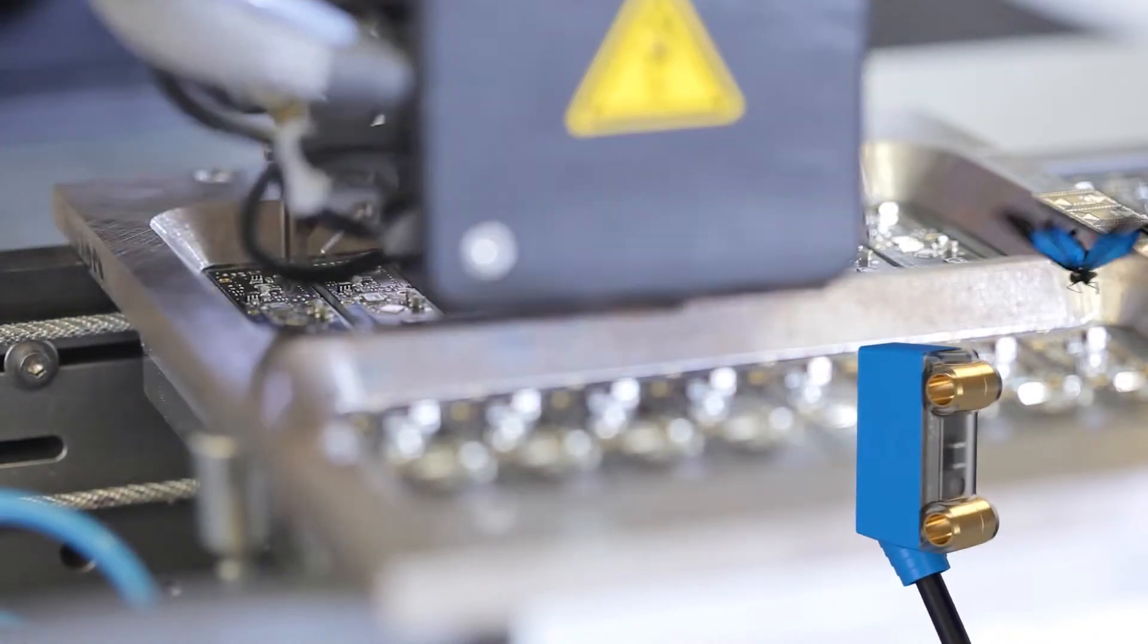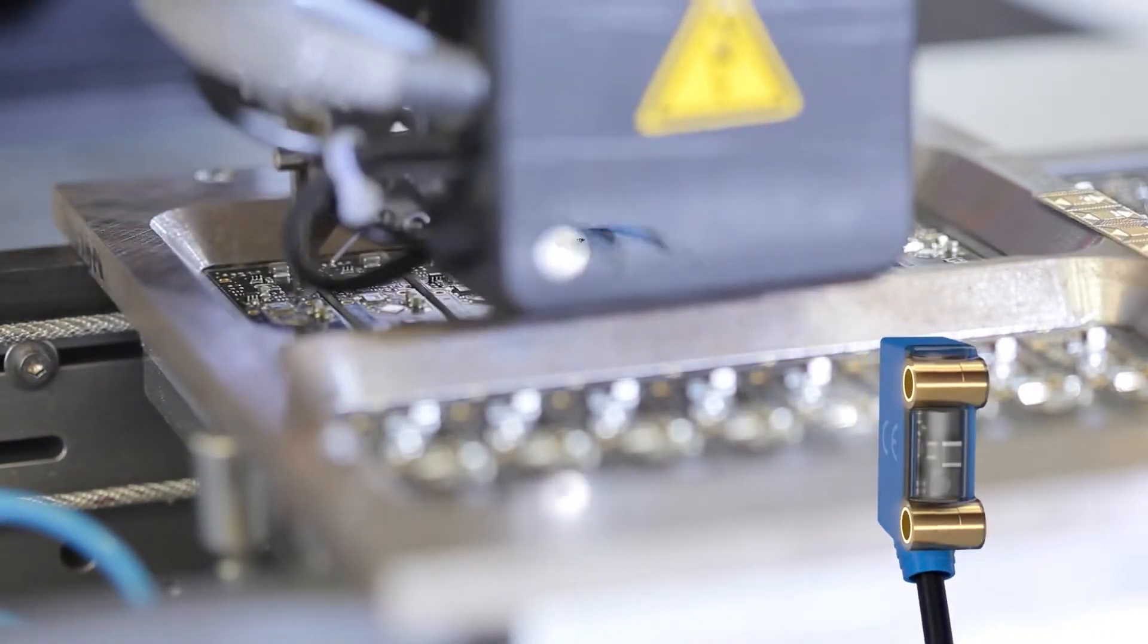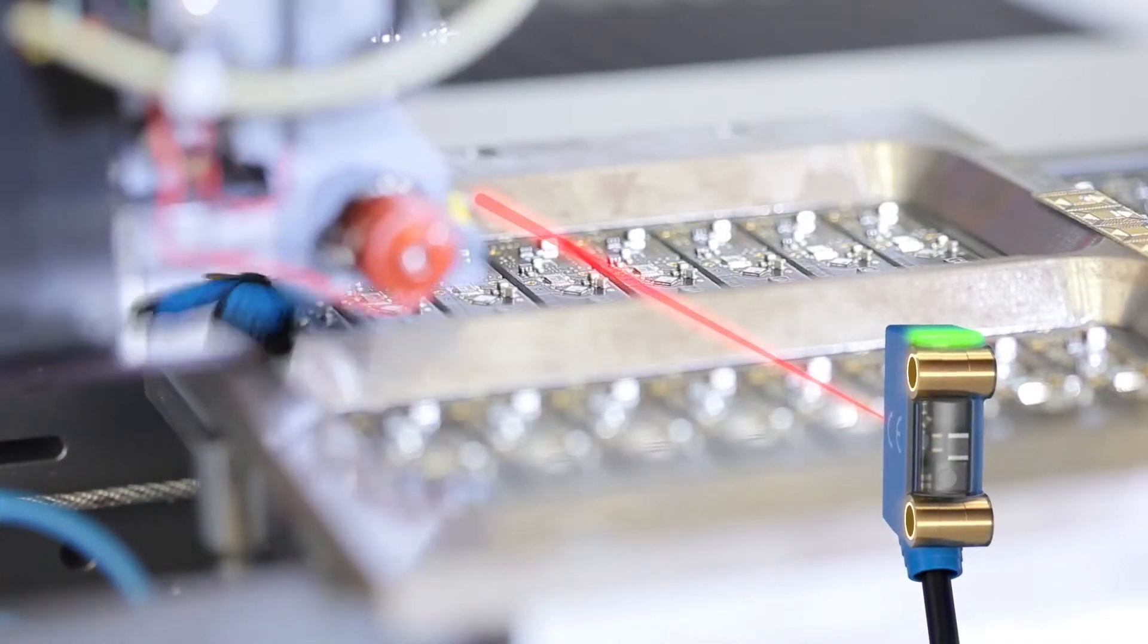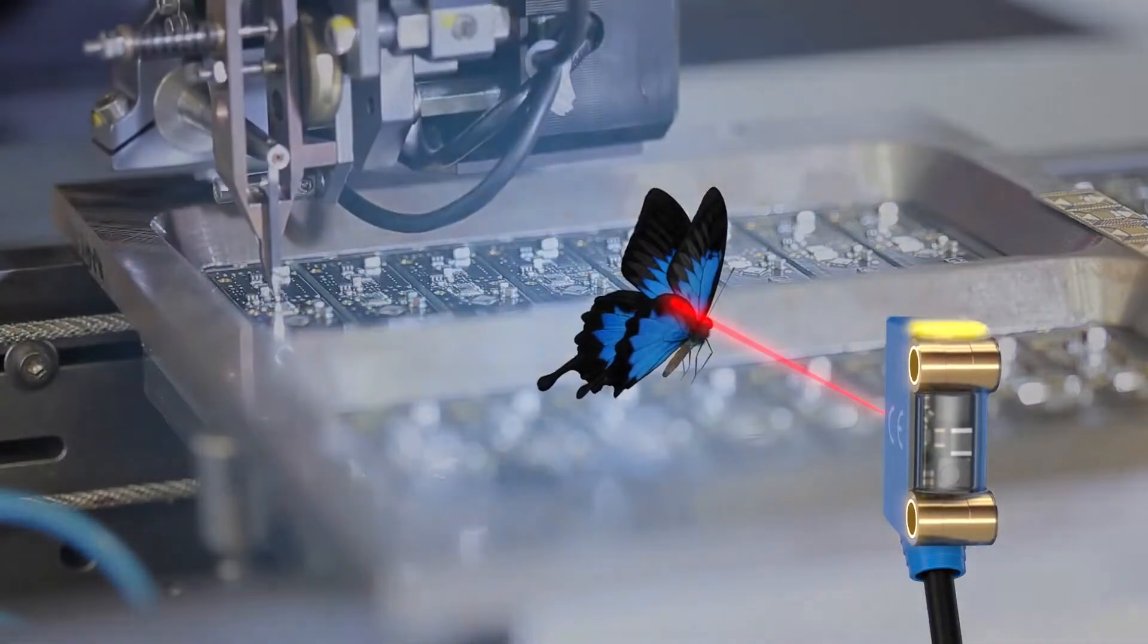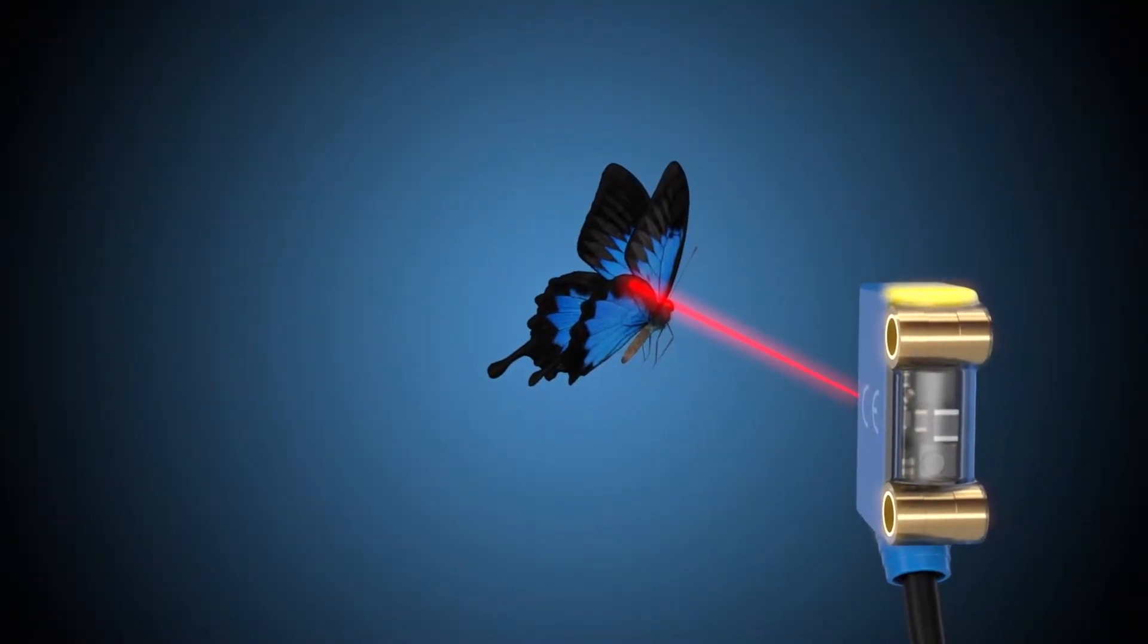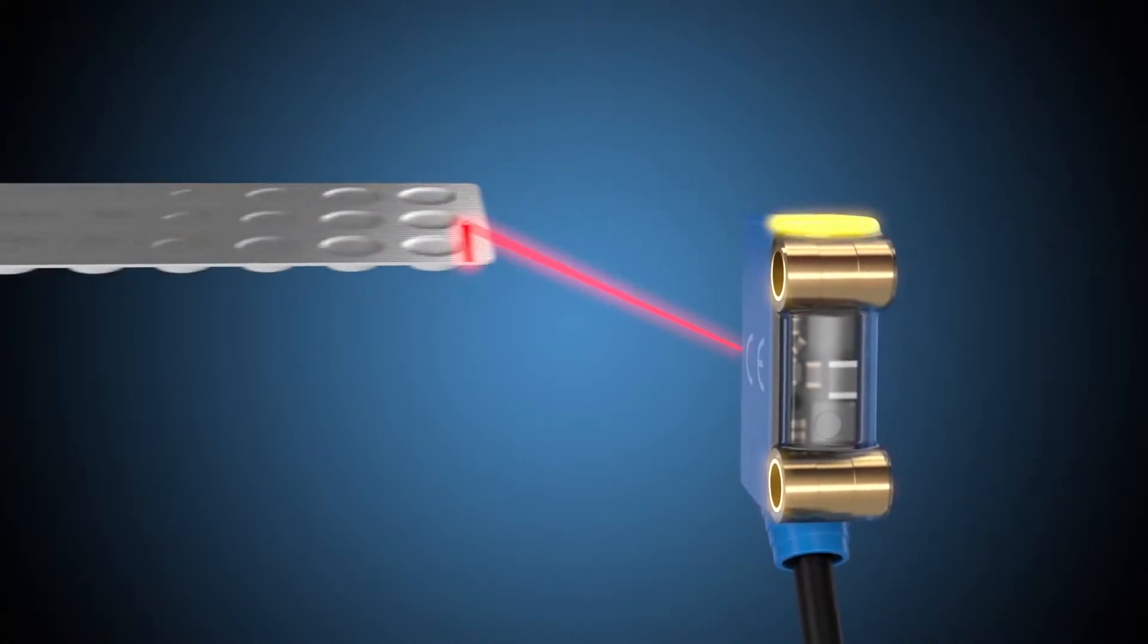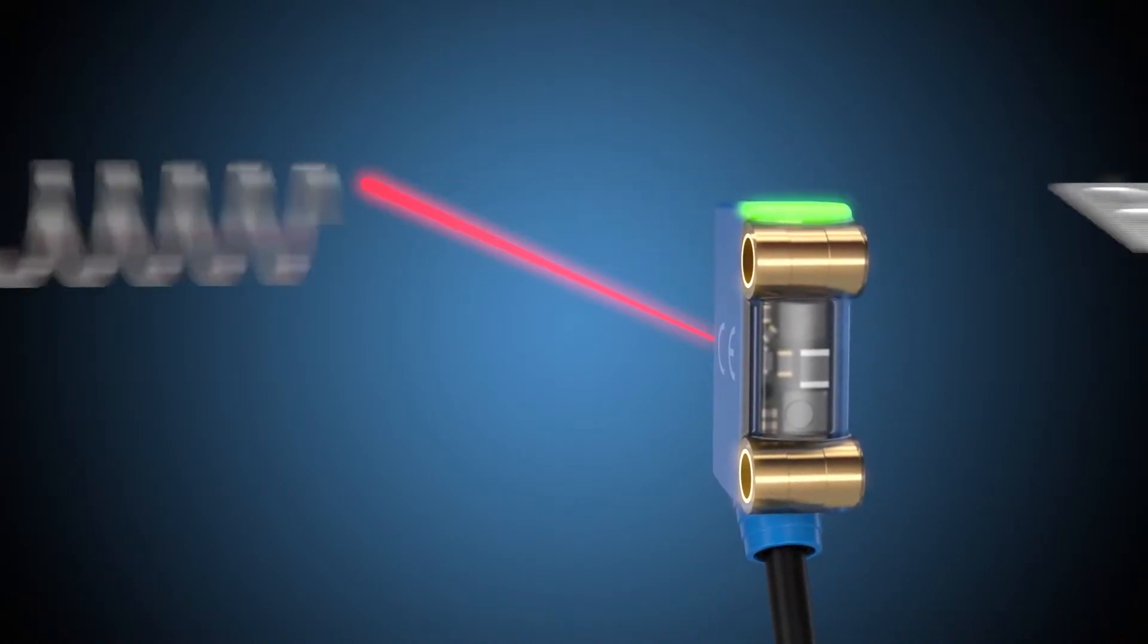But even this butterfly wouldn't be able to flutter past our ultra-small W2-S2 undetected. Why? Because they detect even the deepest shades of black, enabling them to identify objects of any kind, even if these are reflective or exceptionally thin.